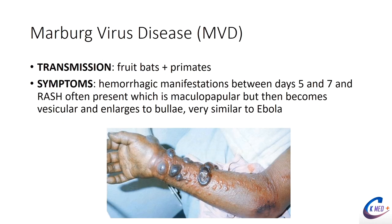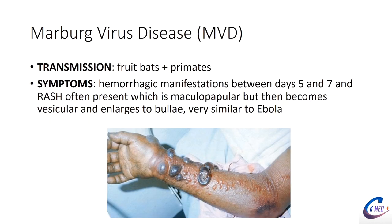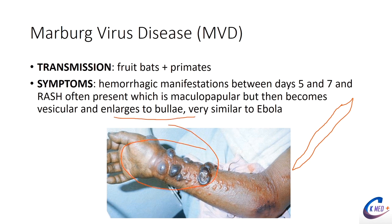Marburg virus is differentiated from Ebola primarily by the presence of a rash — you can see bullae and vesicles on the arms, which you don't commonly see with Ebola. They wouldn't ask you to pick between the two unless they showed you a picture of the virus. Ebola has a long filamentous shape, while Marburg is more bullet-shaped or longer and straight.